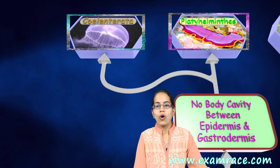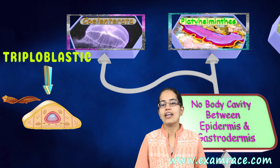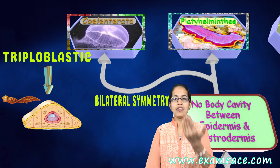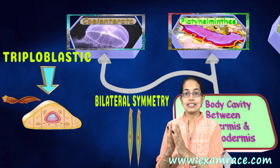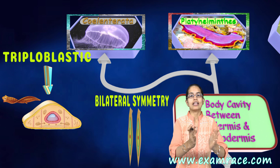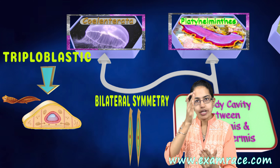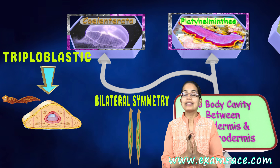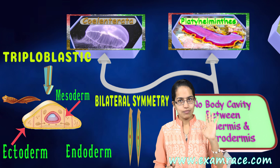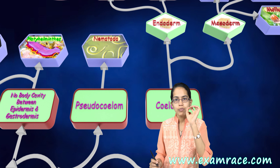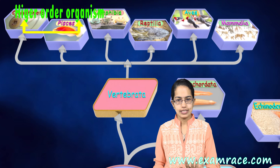A very interesting point: all organisms beyond Platyhelminthes are triploblastic in nature and bilaterally symmetrical. That means if we cut the organism from between, the two sides would exactly overlap unless there is some abnormality. In 99.9% of cases, there would be bilateral symmetry. Triploblastic means they have three layers: ectoderm, mesoderm, and endoderm. So all higher-order organisms beyond Platyhelminthes would be triploblastic and bilaterally symmetrical.